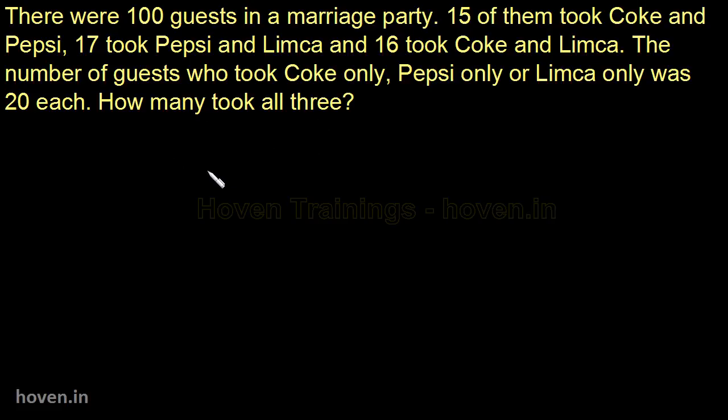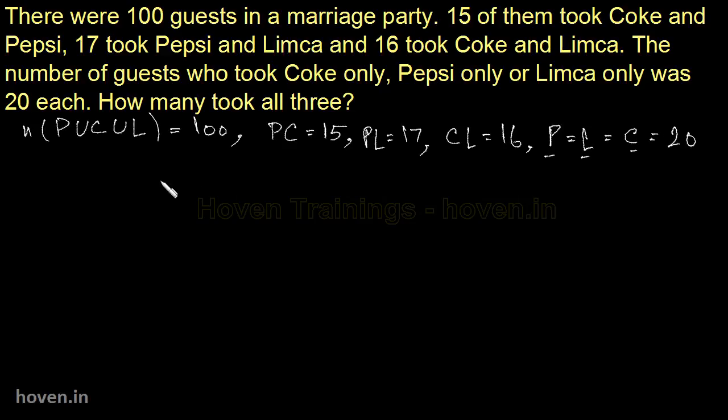So let us now blindly start by writing what has been given to us. 100 guests in a marriage party, so we can write N(P union C union L), P's for Pepsi, Coke and Limca. This is given to us as 100. 15 of them took Coke and Pepsi, so PC is equal to 15. Then 17 took Pepsi and Limca, so we will write PL is equal to 17 and CL is equal to 16 likewise. The number of guests who took Coke only, Pepsi only or Limca only was 20 each. So we have been given P underscore is equal to L underscore is equal to C underscore is equal to 20. How many took all three? So basically we have to find PCL.